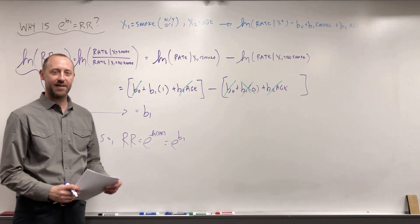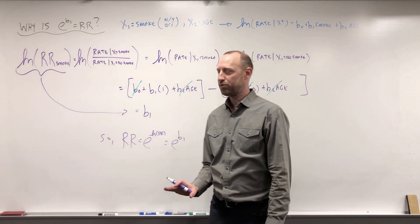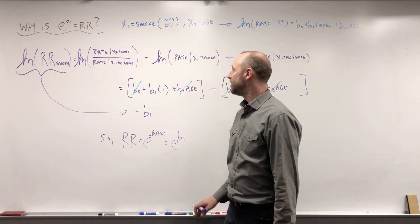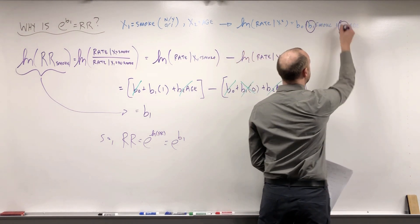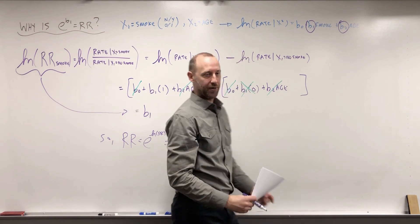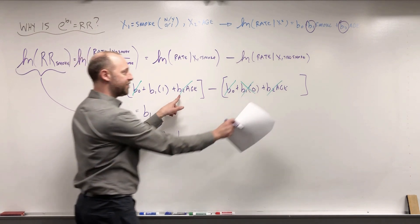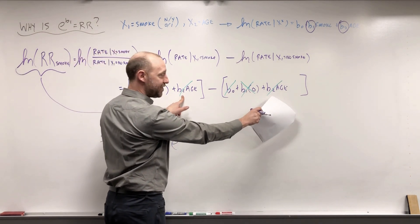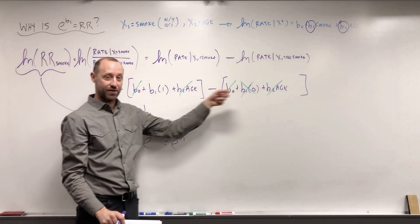So again this is exactly the same explanation we went through with logistic regression, but I thought it was worth going over one more time just to convince you that when we exponentiate these coefficients they give us the rate ratios adjusted for the other variables in the model. And again this is where we see the rate ratio of smoking adjusted for age. We've accounted for age in the numerator and the denominator but those are going to cancel each other out.